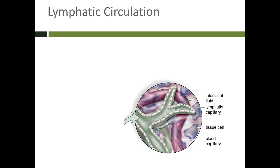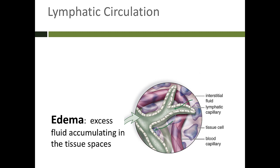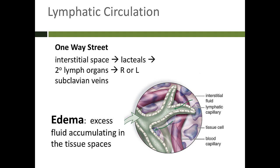Most of the fluid is taken back up to the capillary at the venous end, but about 15% of the fluid doesn't go back into the circulatory system. If it were left to accumulate in the tissue spaces, there would be an excess of fluid there, causing a condition known as edema. The lymphatic system absorbs this fluid and brings it back to the circulatory system. However, it's different from the circulatory system in that circulation goes in one direction — it is a one-way street where excess fluid in the interstitial space is absorbed into the blind lymphatic capillary and carried back to the right and left subclavian veins.